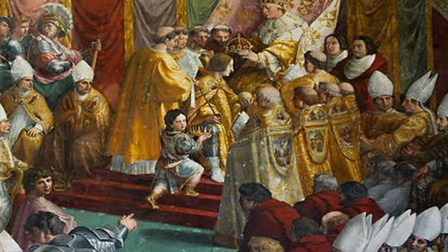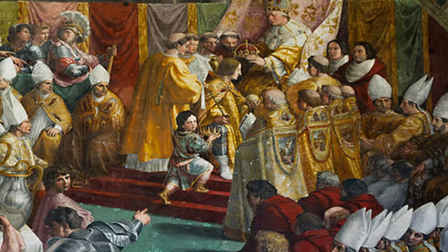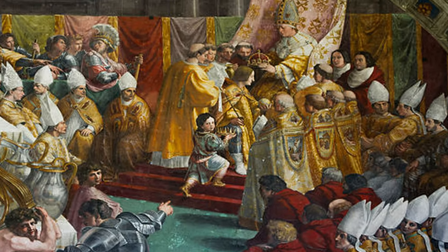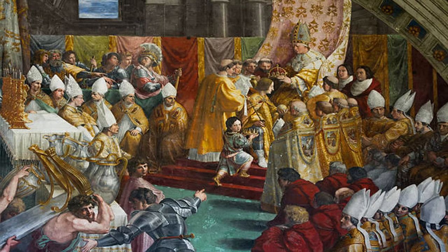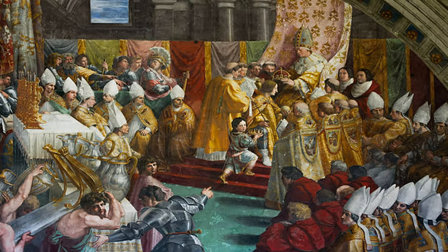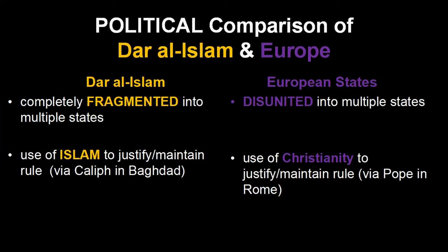How did the leaders of European states legitimize and justify their rule? Christianity. Many kings in Europe would be crowned by religious leaders from the Roman Catholic Church — for example, the local archbishop, or in some cases even the pope himself. This is similar to the Turkic sultans getting legitimacy from the Abbasid Caliph in Baghdad — and yes, that is a very good comparison.